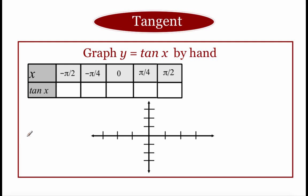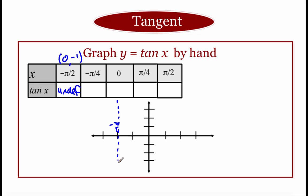We're going to start off graphing a tangent function by just making a table of values. I've already got a list of x values to plug in: negative pi over 2, negative pi over 4, 0, pi over 4, and pi over 2. Focusing on negative pi over 2 first, the ordered pair there is (0, -1). If we think about how we make a tangent fraction, we go y over x, so we'd get negative 1 over 0 — an undefined value. And if we think back to rational functions, any time we got an undefined value, we had an asymptote. So at negative pi over 2, we're going to have a vertical asymptote.